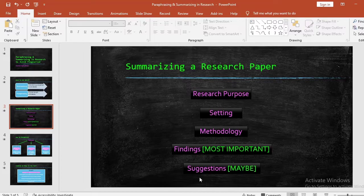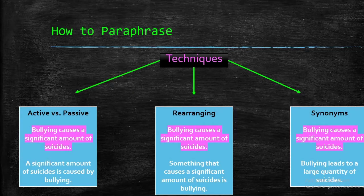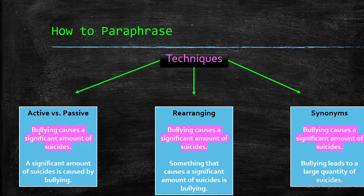Paraphrasing is when we take all the points of the original text and write it in our own words. There are a few techniques for doing this. Number one is active versus passive — we can simply turn the active sentence into a passive sentence or vice versa. For example, the sample sentence is: 'bullying causes a significant amount of suicides.' We can turn it into: 'a significant amount of suicides is caused by bullying.' Very simple.